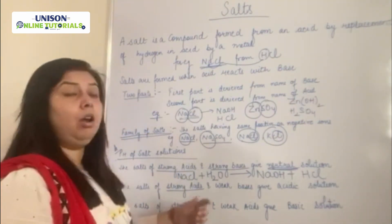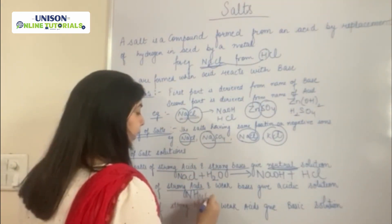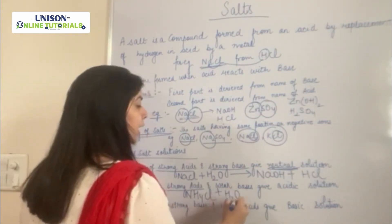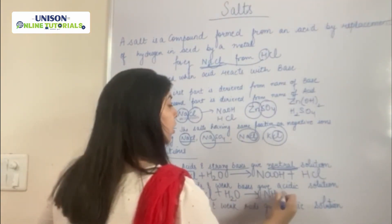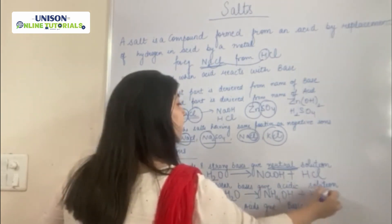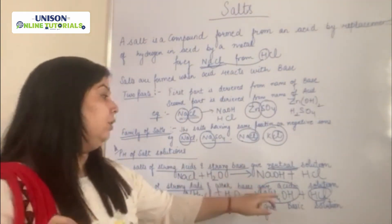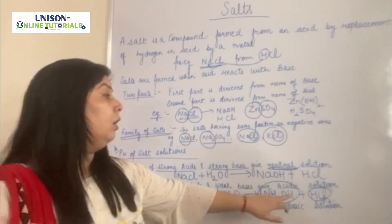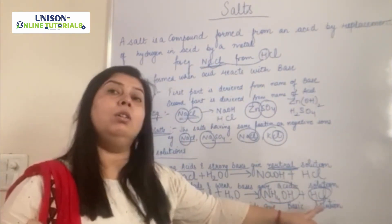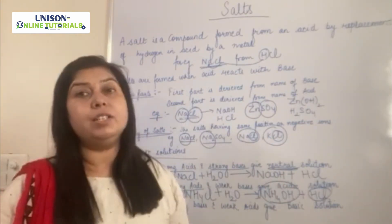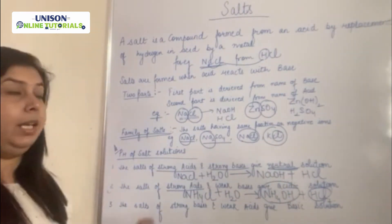Next, we have a salt of strong acid and weak base — for example, NH4Cl. On hydrolysis of NH4Cl, you get NH4OH and HCl. HCl is strong and NH4OH is weak. Since NH4OH is weak, fewer OH- ions are liberated, while more H+ ions are liberated from the strong HCl. Therefore, the solution is acidic in nature.